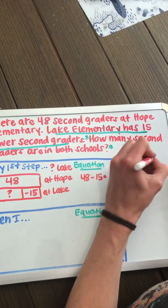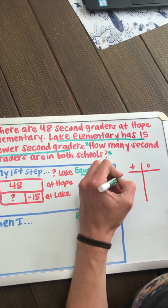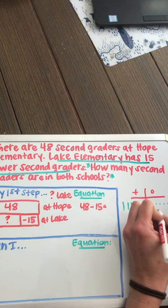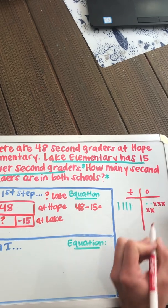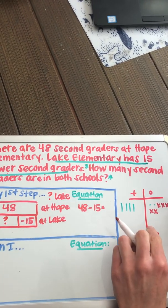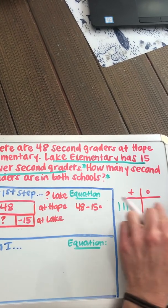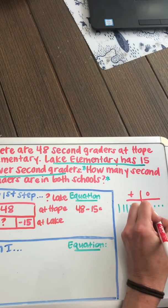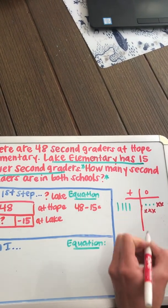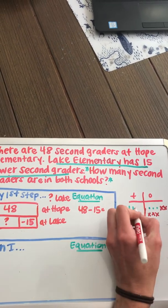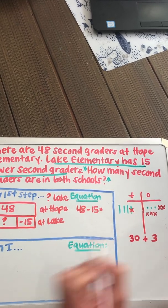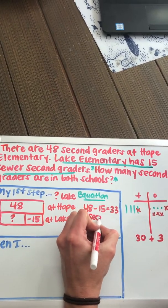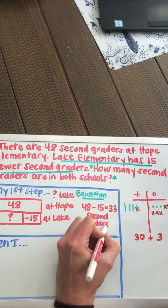Let's come over here and solve it with my tens and my ones. Let's represent 48 and take away one ten and five ones. Starting with the ones — I'll take away five ones, leaving three ones. I need to also take away my one ten, leaving three tens, which is 30. So step one tells me that there are 33 second graders at Lake Elementary. I had to figure out how many second graders were at Lake Elementary — that was step one.